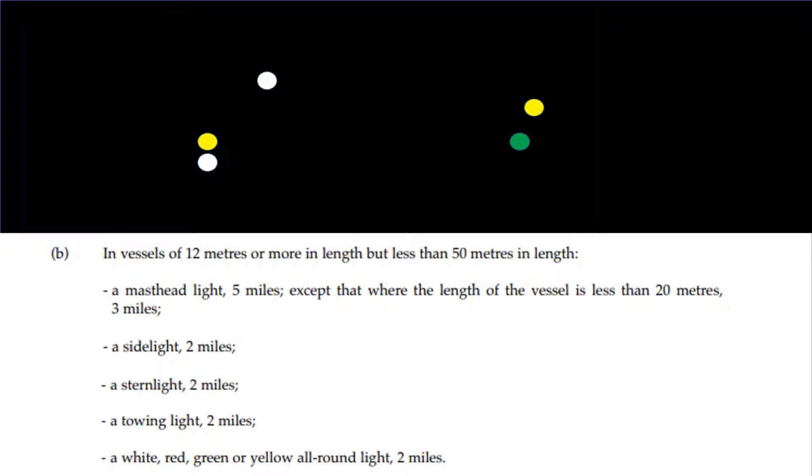In vessels of 12 metres or more in length but less than 50 metres in length: a masthead light 5 miles, except that where the length of the vessel is less than 20 metres, 3 miles; a side light 2 miles, a stern light 2 miles, a towing light 2 miles, a white, red, green or yellow all-round light 2 miles.